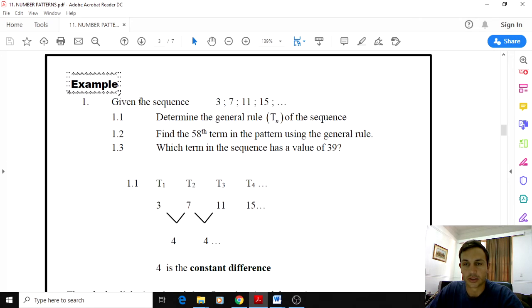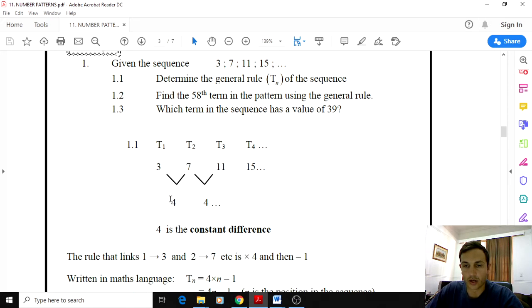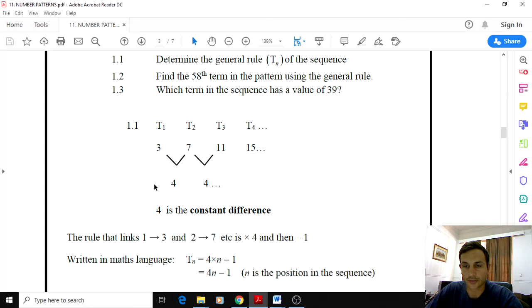Let's do an example. Here we have a sequence 3 to 7 to 11 to 15. Determine the general rule of the sequence. Like we saw in the previous example, you first look for a constant difference. So what is the difference between each term? And is it constant? In this case it is. We are adding 4 every time. And by the way, constant difference isn't always addition, it can be subtraction. The general rule over here t_n is equal to 4n minus 1. That's your answer.